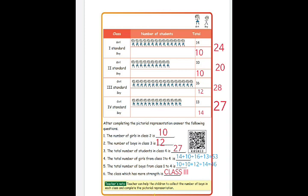Third question: total number of students in class 4. Add boys and girls in class 4 — 14 girls plus 13 boys equals 27. Fourth question: total number of girls from class 1 to 4. Add all girls: class 1 has 14, class 2 has 10, class 3 has 16, class 4 has 13. Fourteen plus 10 plus 16 plus 13 gives 53 girls.